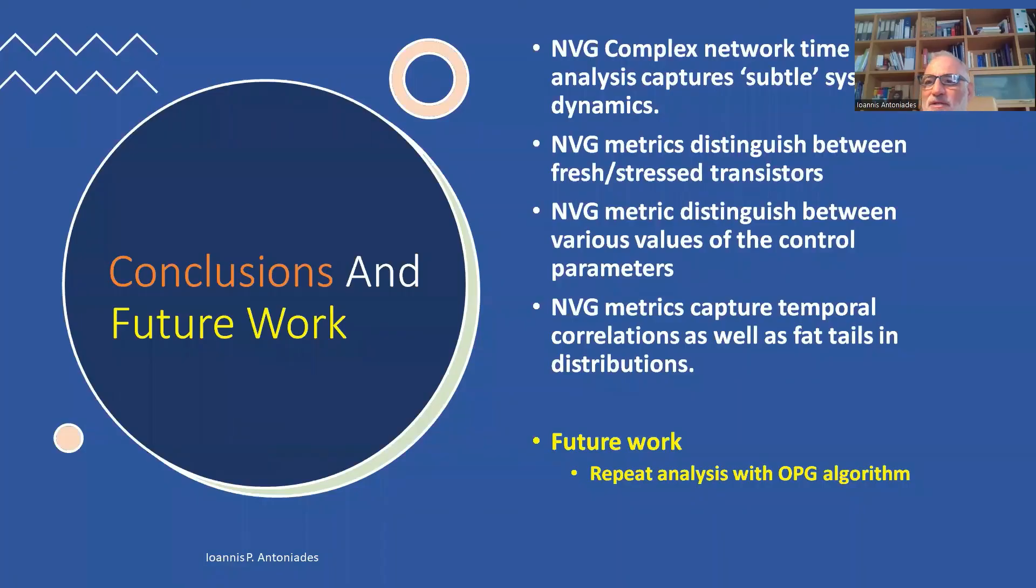So as a conclusion, we have seen that the complex network time series analysis captures the subtle system dynamics. The graph metrics distinguish between fresh and stressed transistors. They distinguish between various values of the control parameters, which is the gate voltage. And they also capture temporal correlation as well as the existence of fat tails in the distribution.